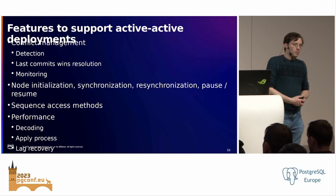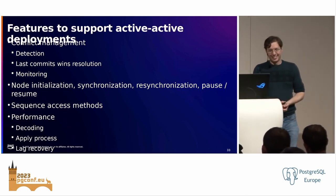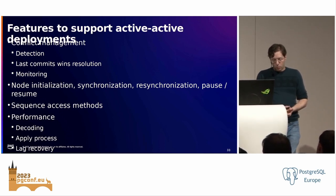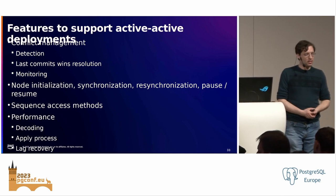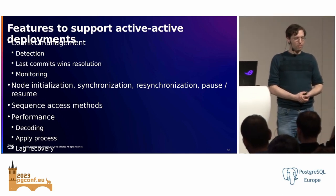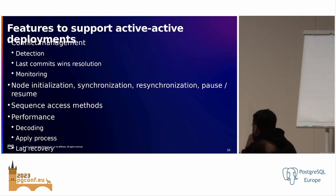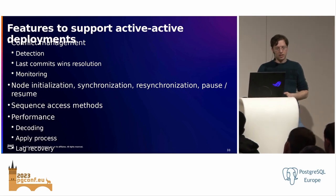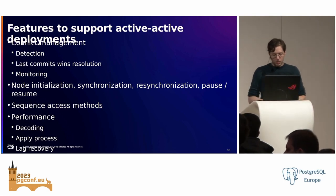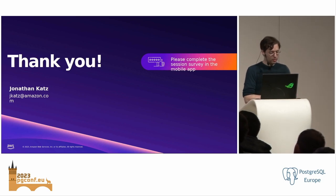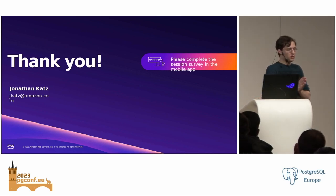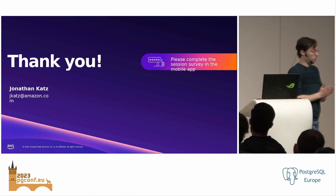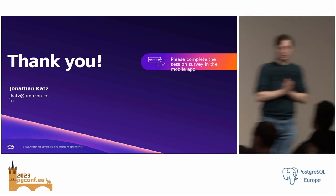We need to improve performance for logical replication. When pushed at scale, these systems don't perform as well as their counterparts. We need to continue improving that. With that, I want to leave a few minutes for questions. Thank you — I hope this was informative and that you understand the journey we need to take to make Postgres viable for active-active deployments.